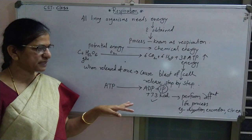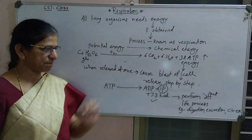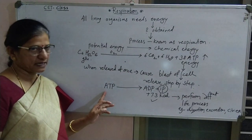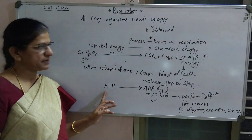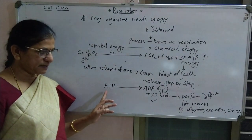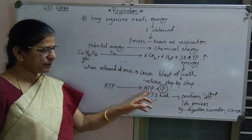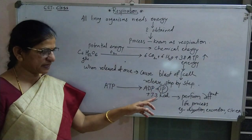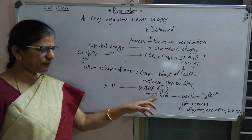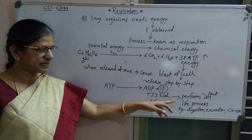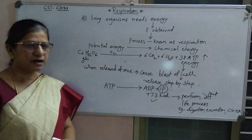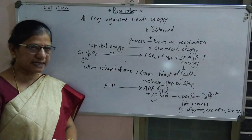For example, glucose — that is the organic food or potential energy — C6H12O6 is oxidized to liberate energy. The byproducts are carbon dioxide and water, and about 38 ATP is released. This release of energy does not take place at once because it causes blast of cells. To avoid damage, this energy is released step by step. ATP, once formed inside the cell during glycolysis inside the mitochondria, is converted into ADP by breaking one bond of phosphate, releasing 7.3 kilocalories of energy.